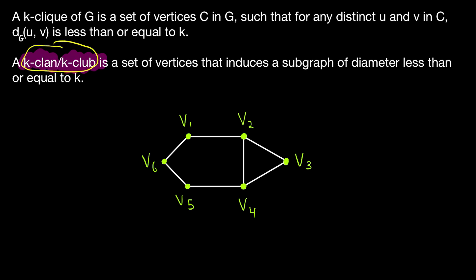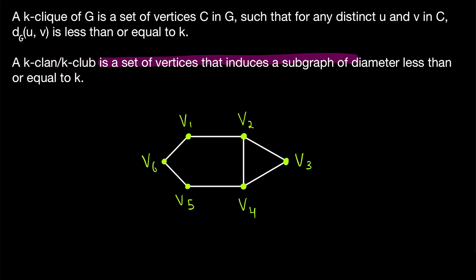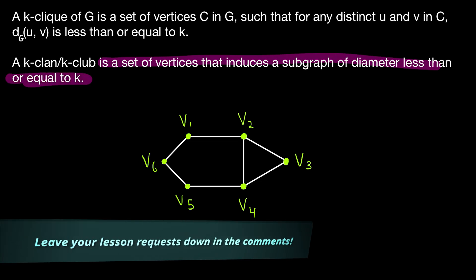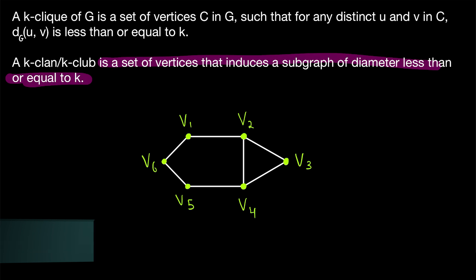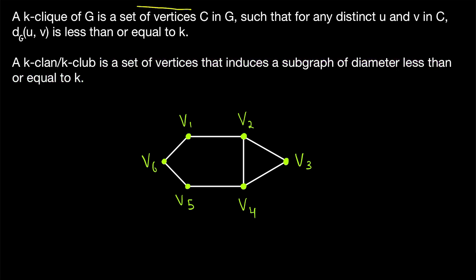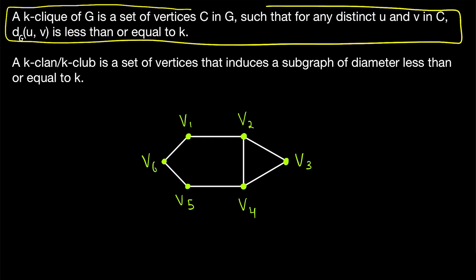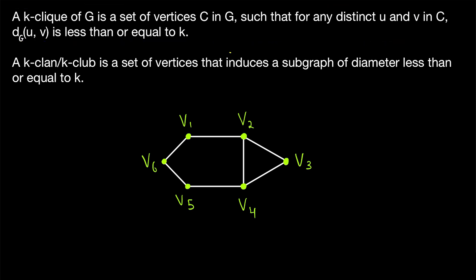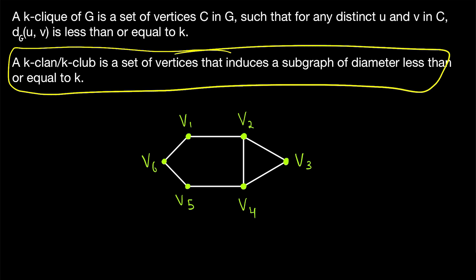These terms don't have a universally standard usage. What I've found after looking at lots of papers is most papers do not use both terms. Most papers use one or the other — either K-clan or K-club — to mean the same thing. So when most papers refer to a K-clan or K-club, this is what they are talking about. However, I did find at least one source that does distinguish between K-clans and K-clubs.